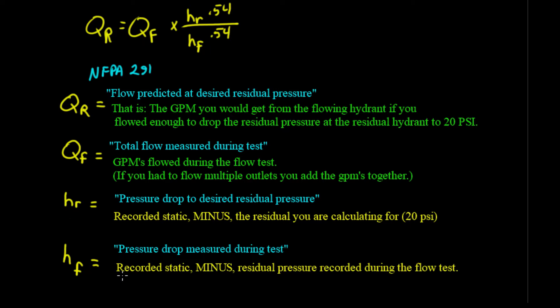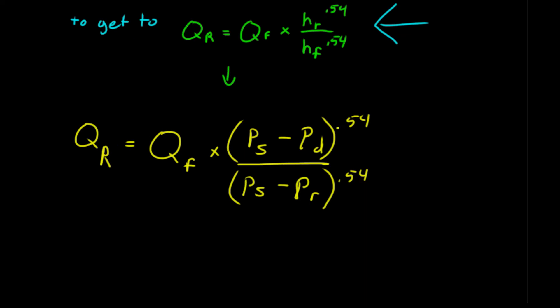HF, pressure drop measured during test. That's your recorded static minus your residual pressure recorded during the flow test. So, the way they get that is from this.